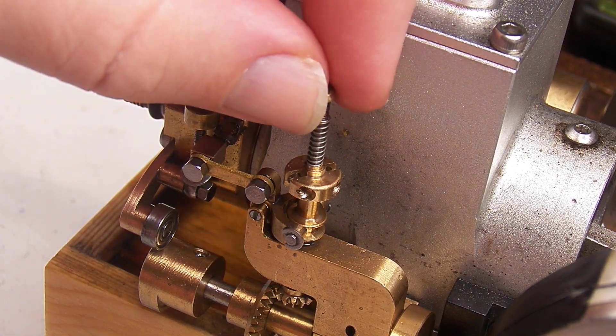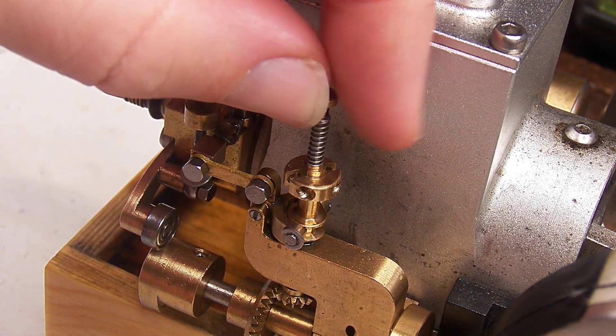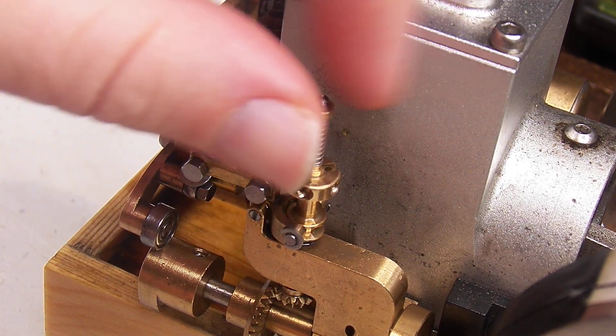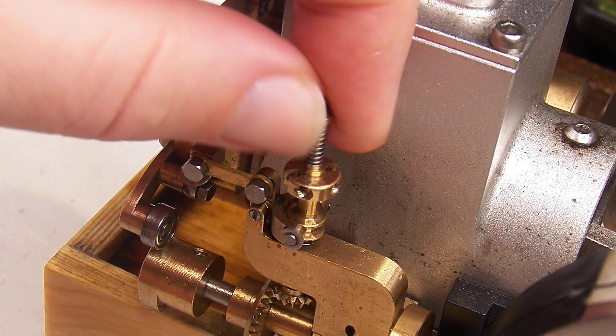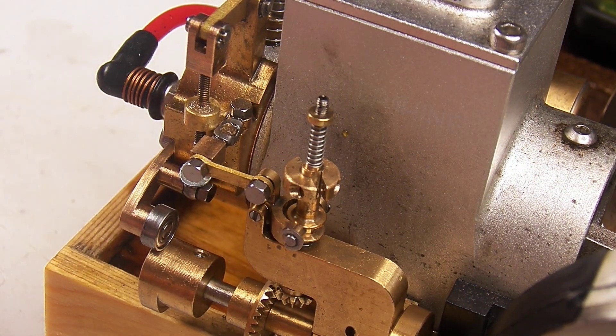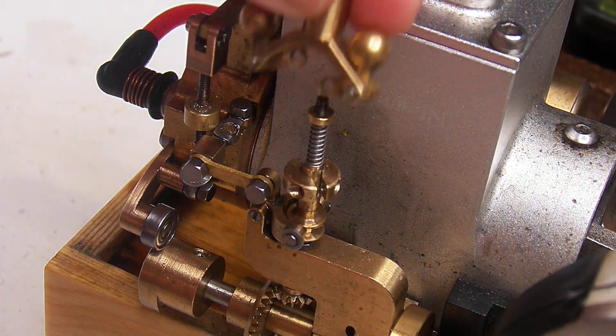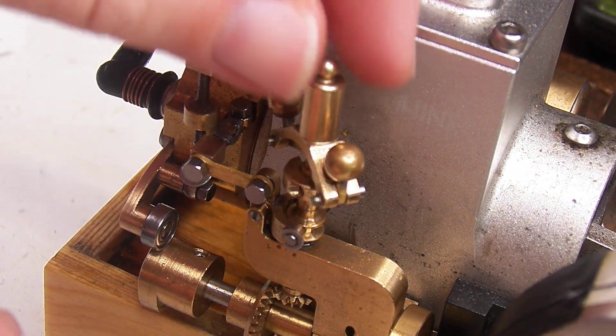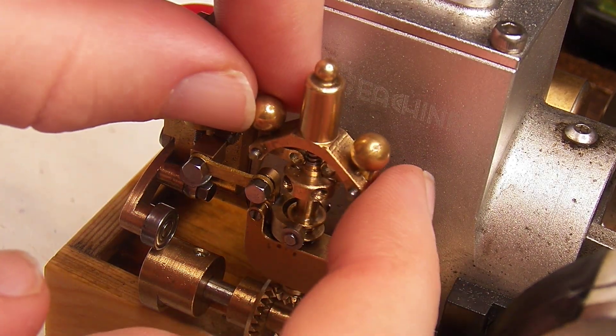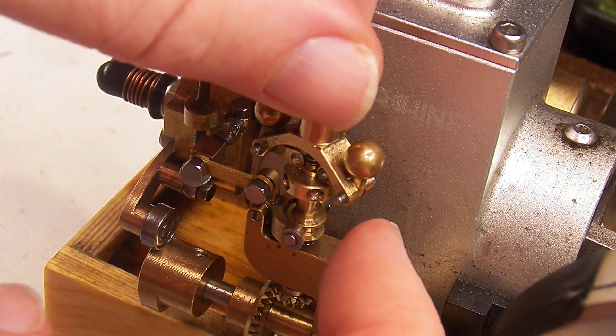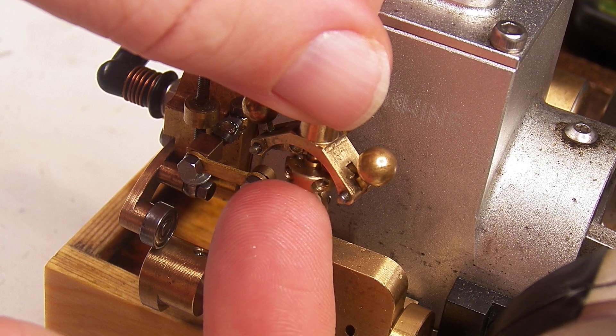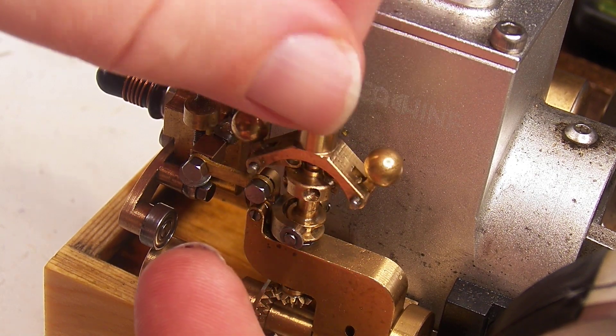Put this threaded collar back on and that holds the spring in place. It needs to be threaded all the way down because if you don't thread it all the way down, it changes the geometry of the flyball arms here and the governor may not retract enough to actually raise the detent into place.